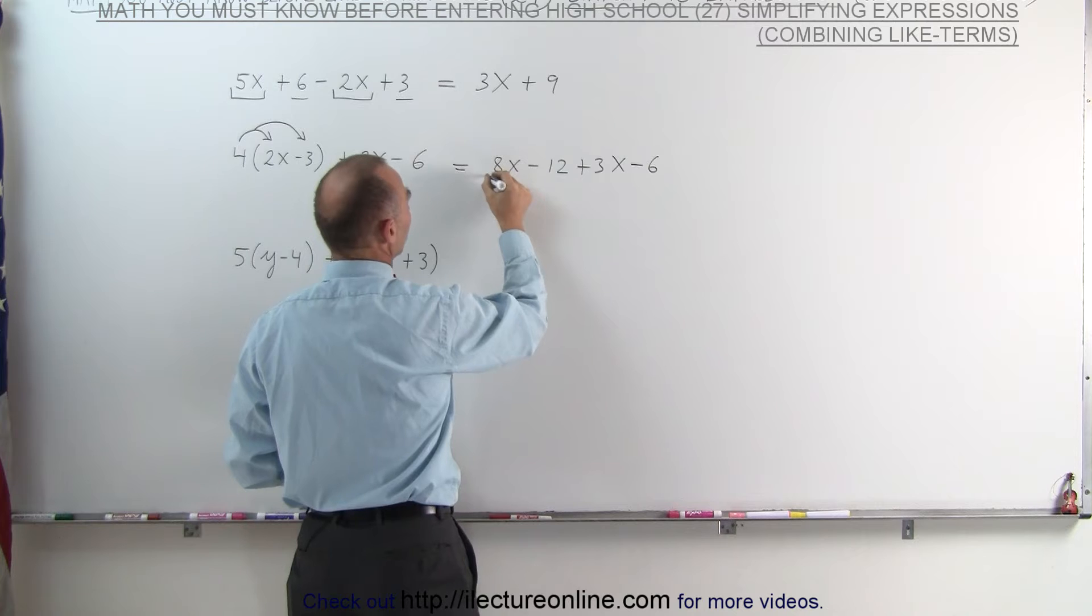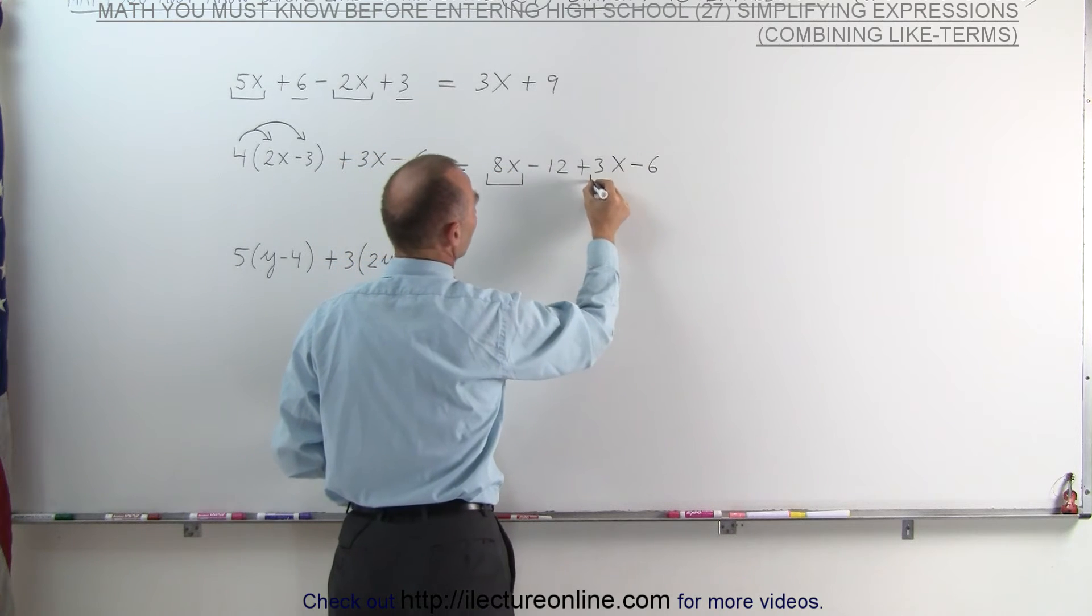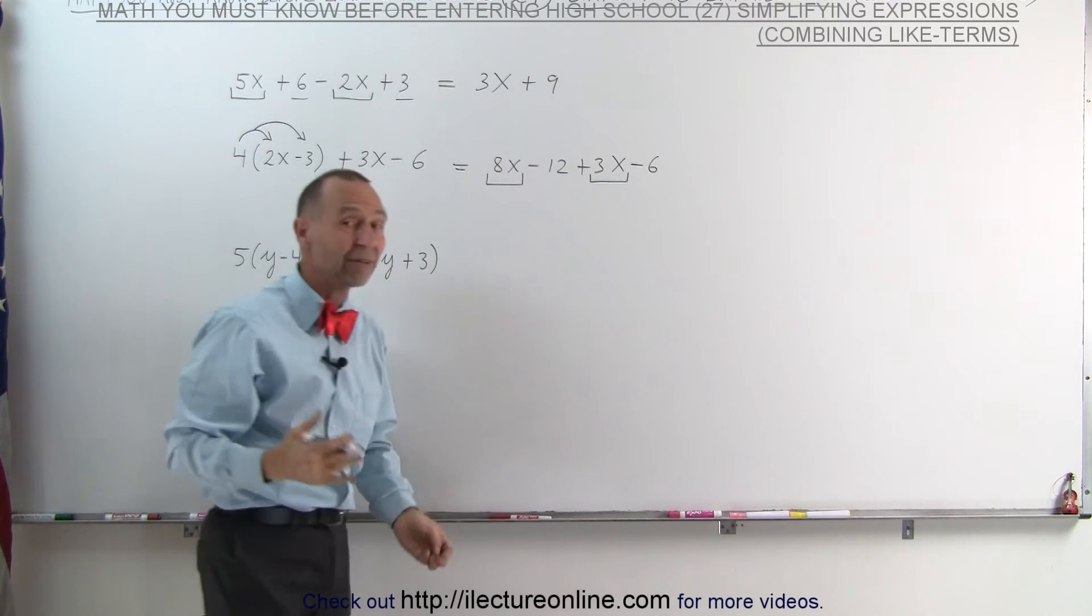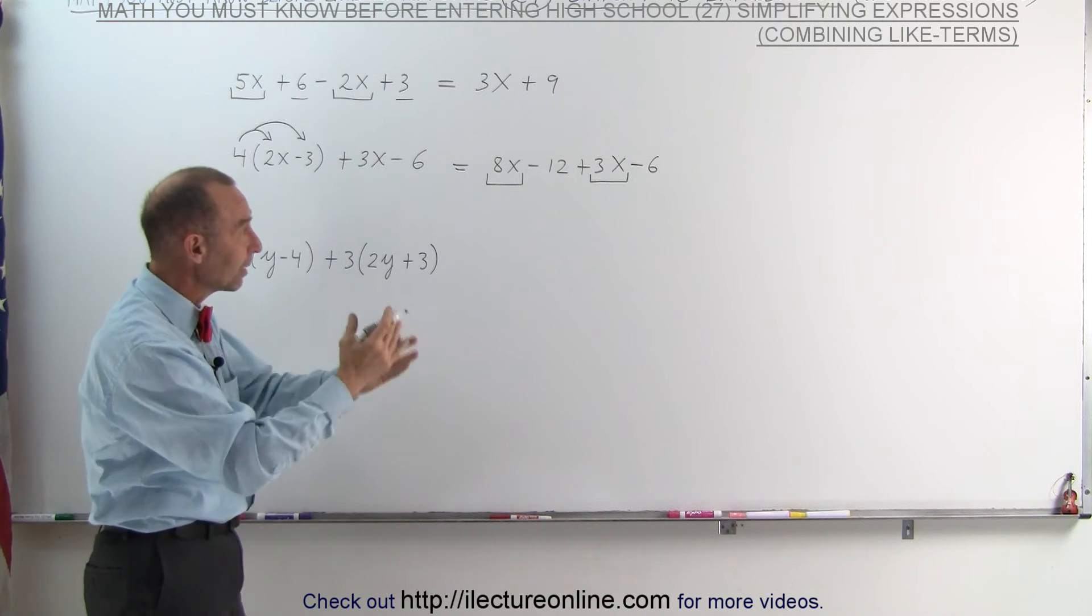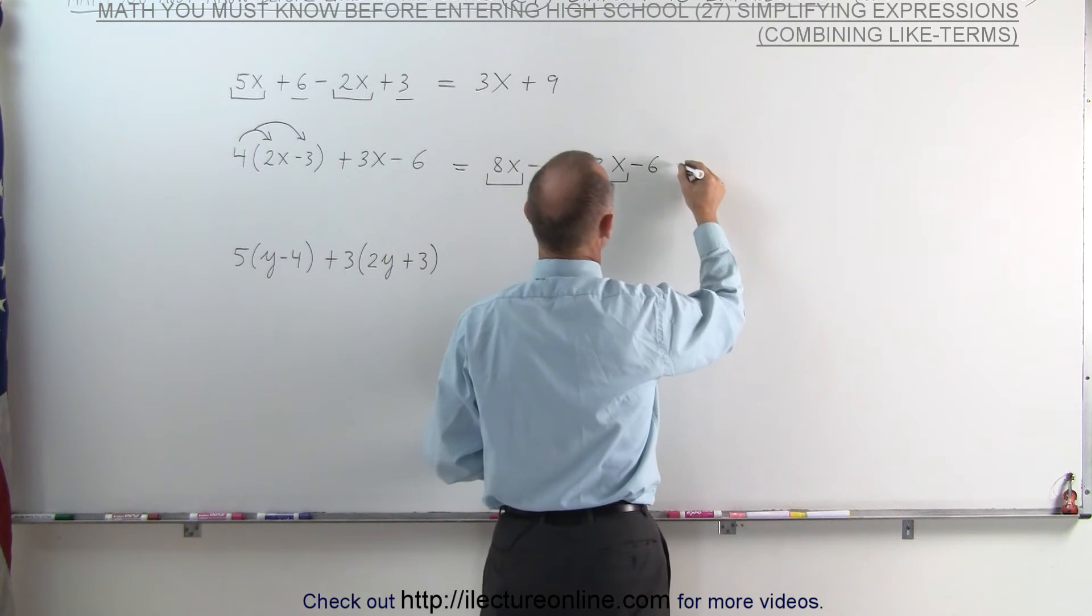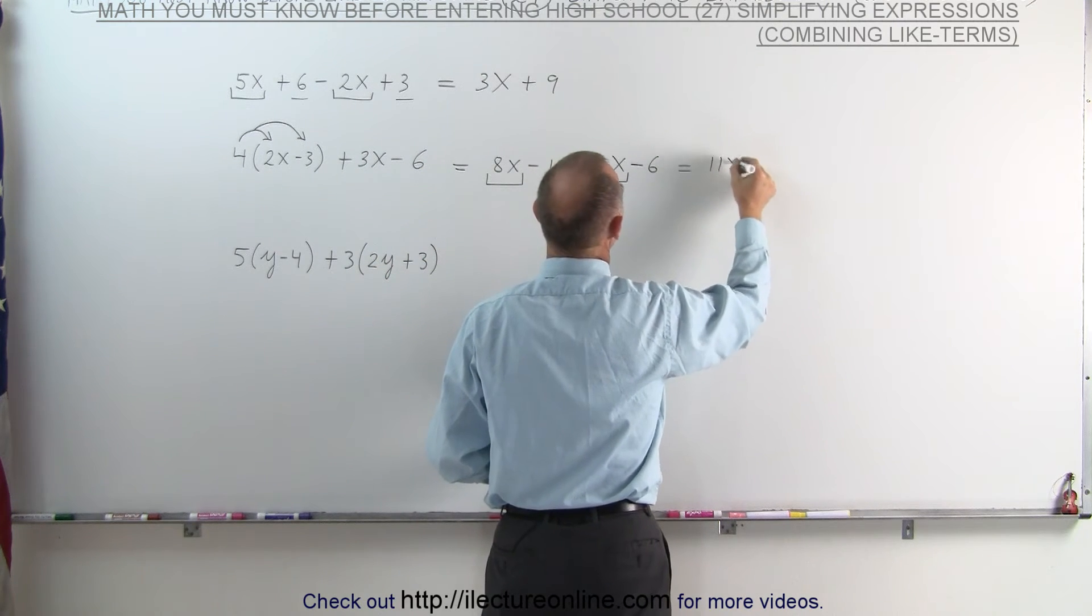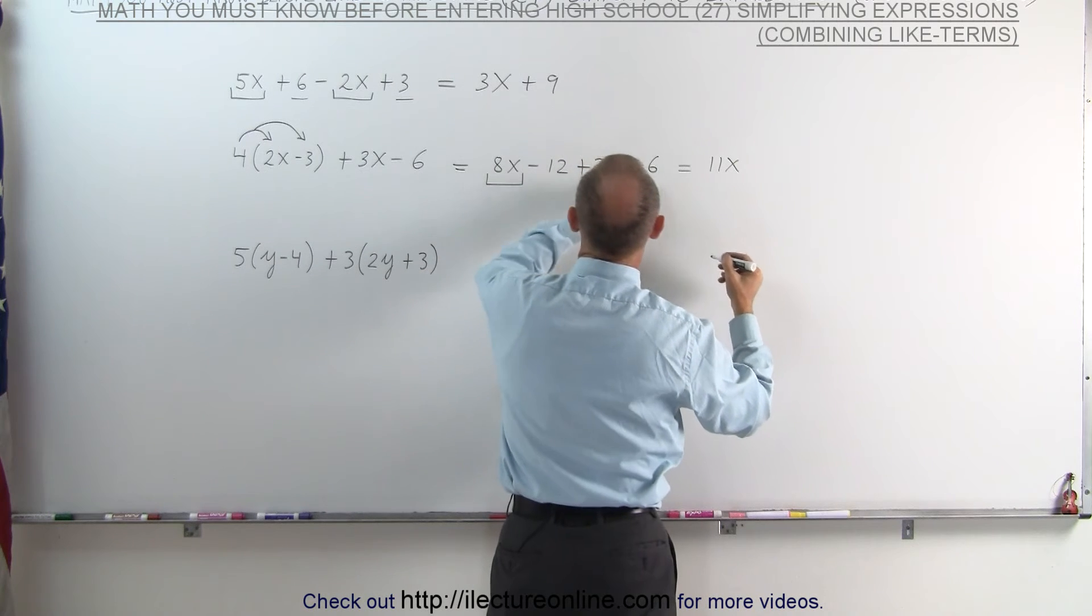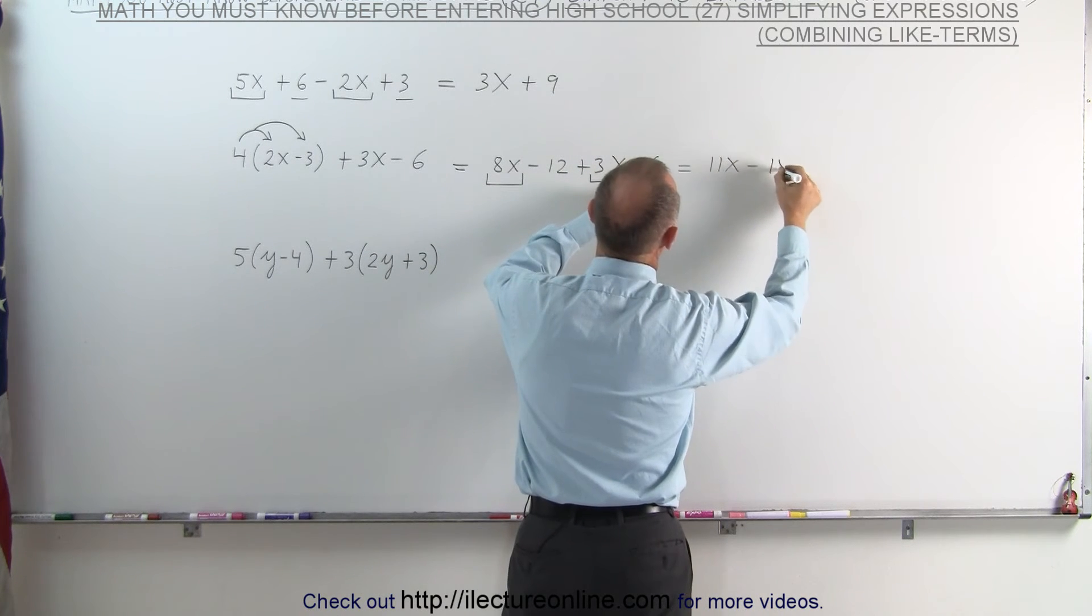Notice that the term 8x and the term 3x are like terms. They have the same letter part, therefore they can be combined. 8 plus 3 is 11, this becomes 11x, and minus 12 minus 6 is minus 18.